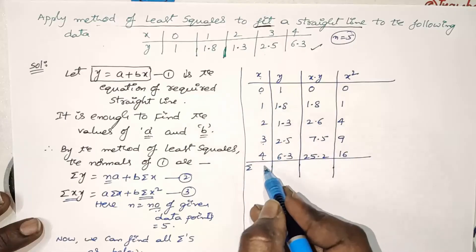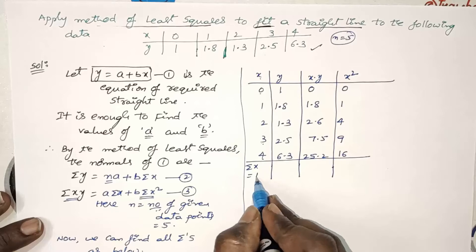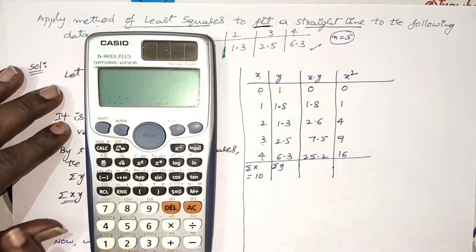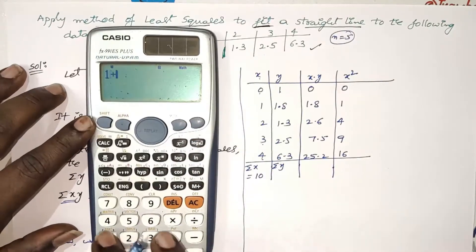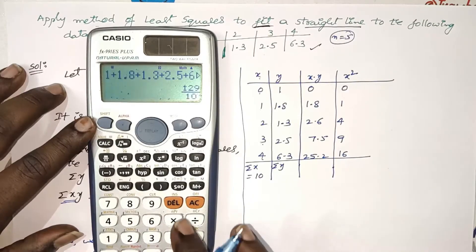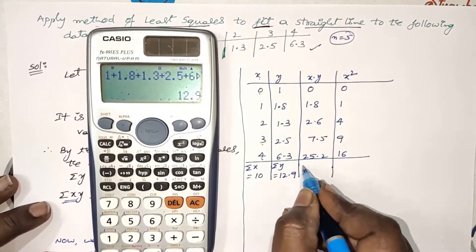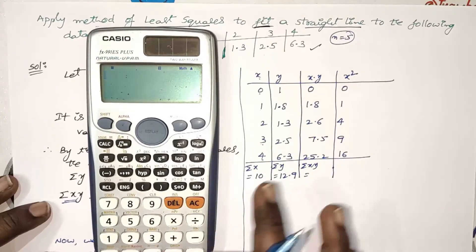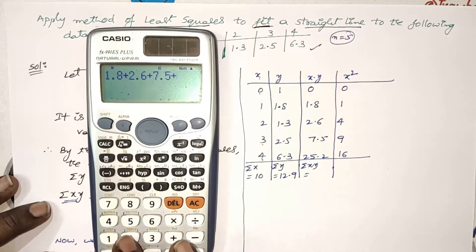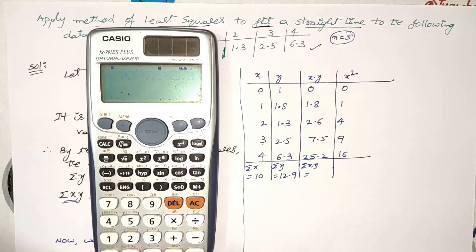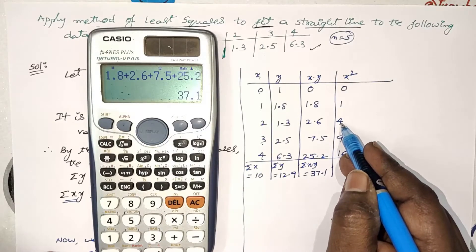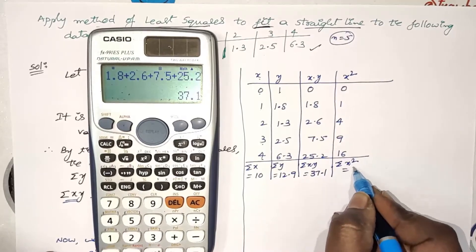Now add all columns. Adding x values: 0+1+2+3+4 = 10, so σx = 10. For σy, using a calculator — because decimals are involved — 1 + 1.8 + 1.3 + 2.5 + 6.3 = 12.9. For σxy: 0 + 1.8 + 2.6 + 7.5 + 25.2 = 37.1. For σx²: 0 + 1 + 4 + 9 + 16 = 30.